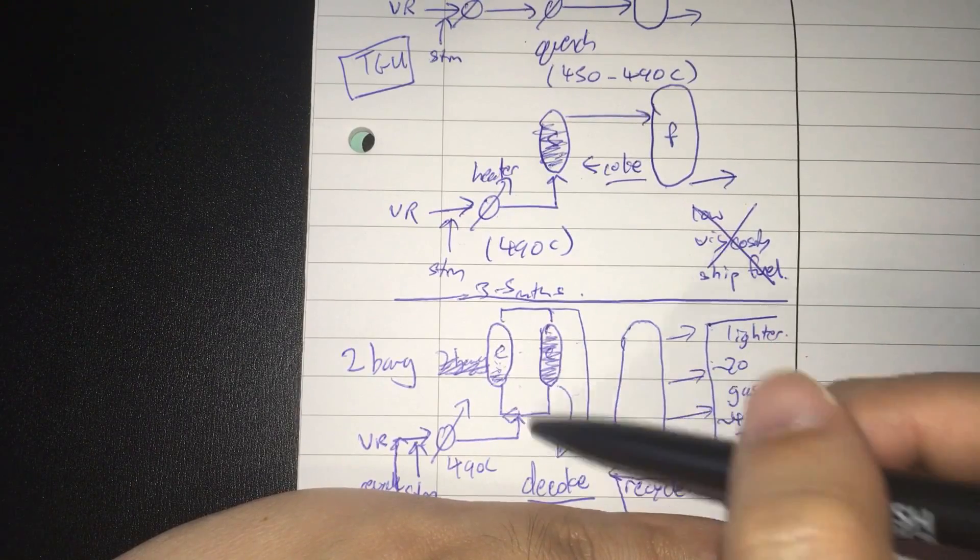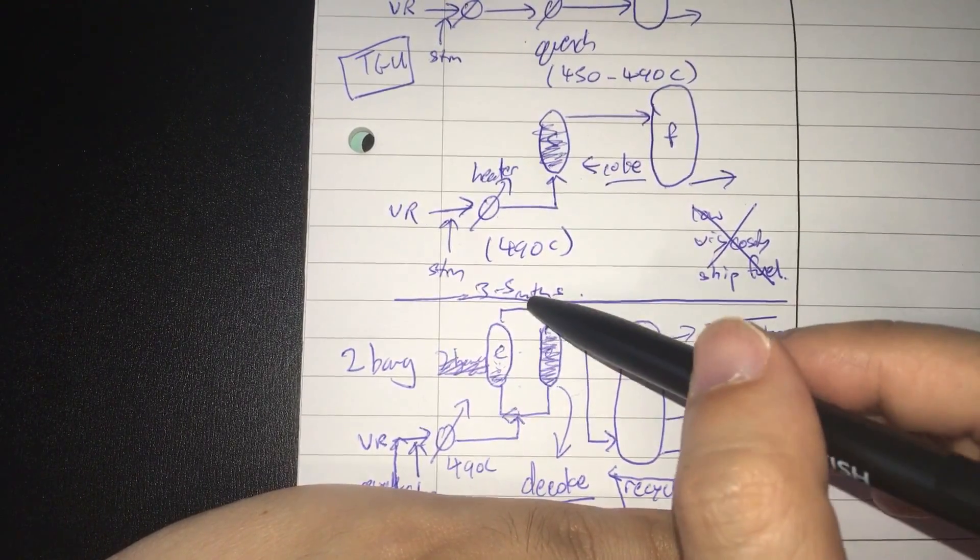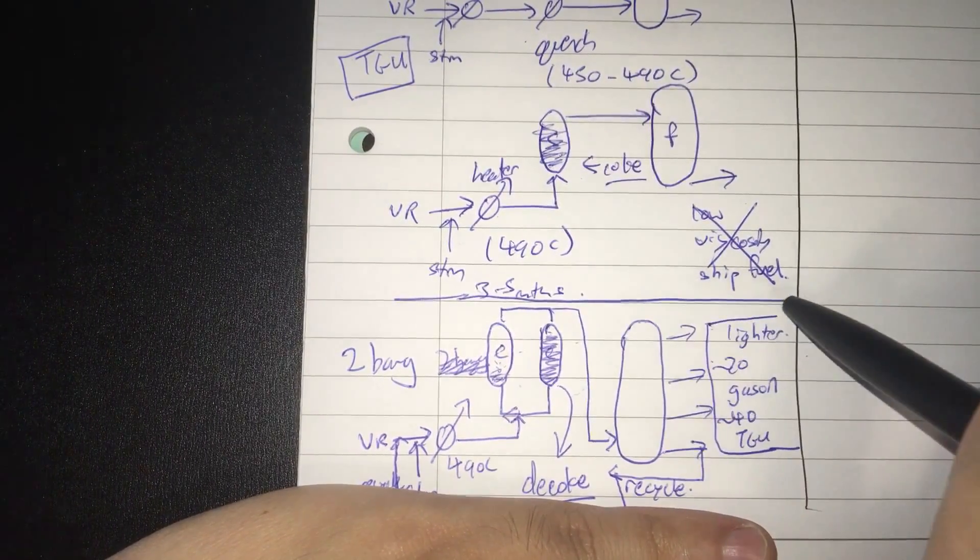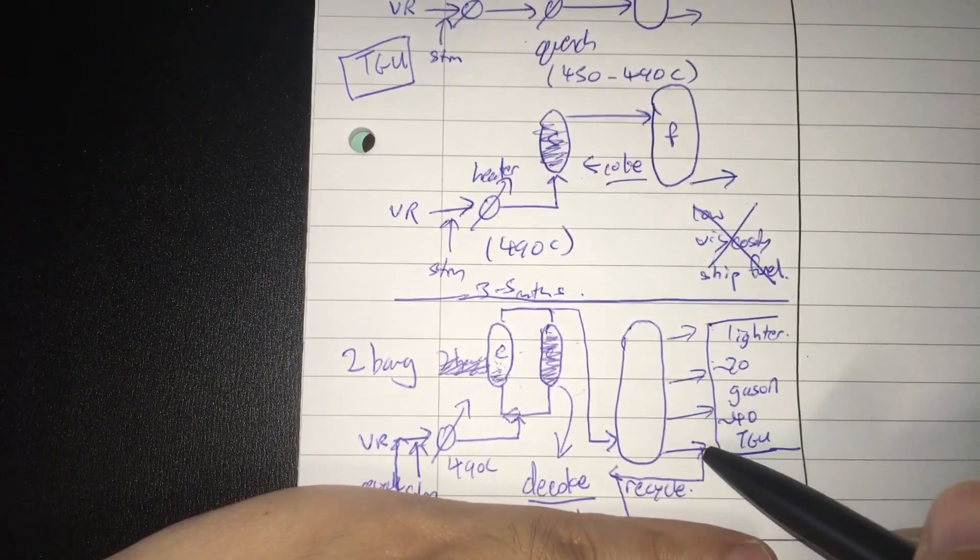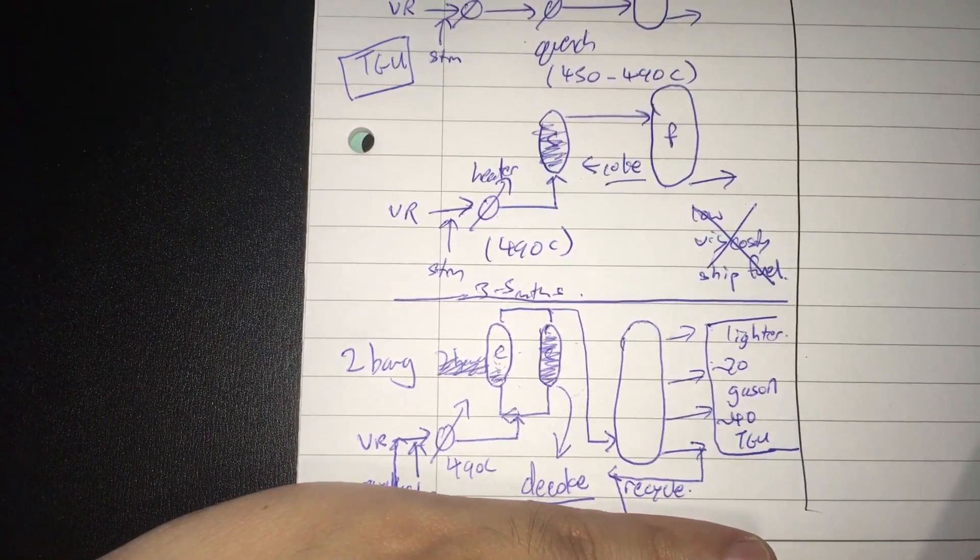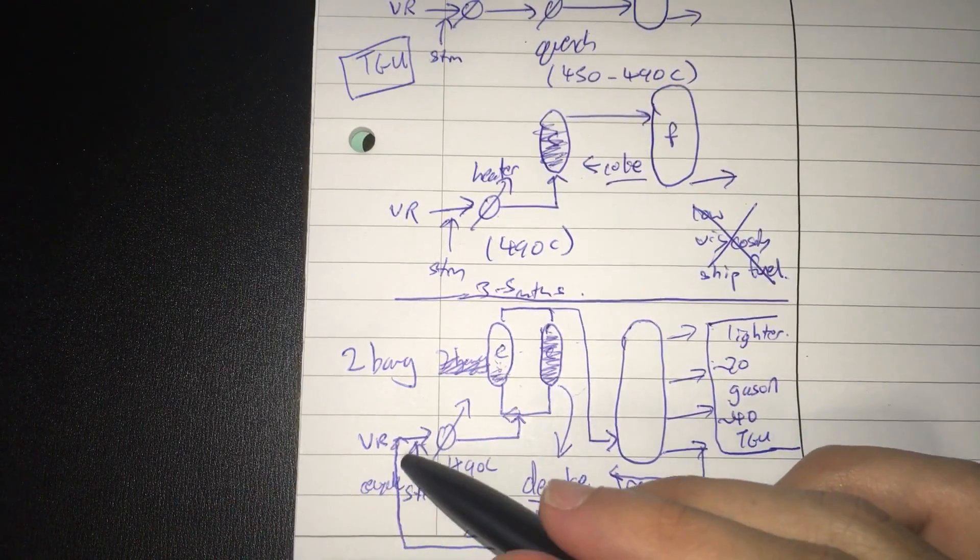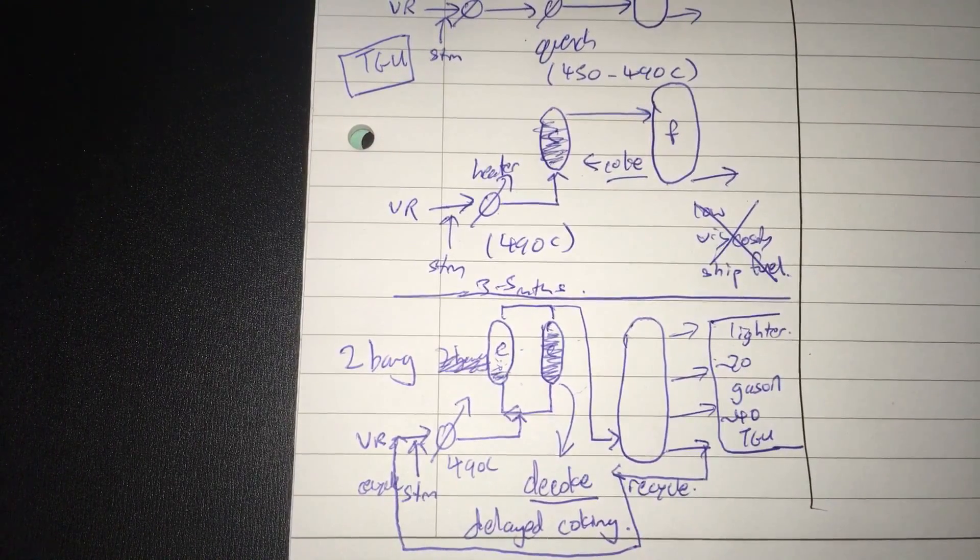After you decoke this furnace, this one will probably fill up, and then you just switch it back. And the rest of the stuff will go into the fractionator, where you have the lighter distillates that come out, and of course, a little bit of residue. What can you do with this residue? Just recycle it back with your feed. And that's how a delayed coker works.